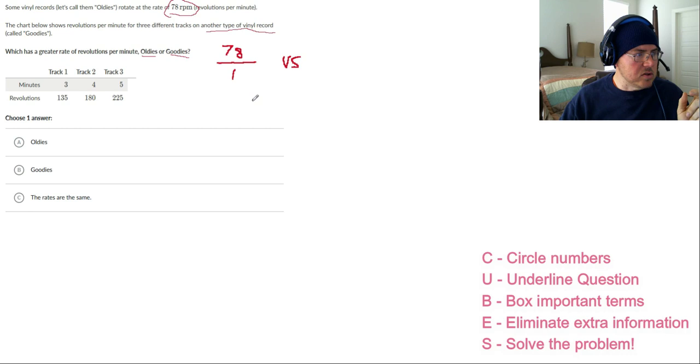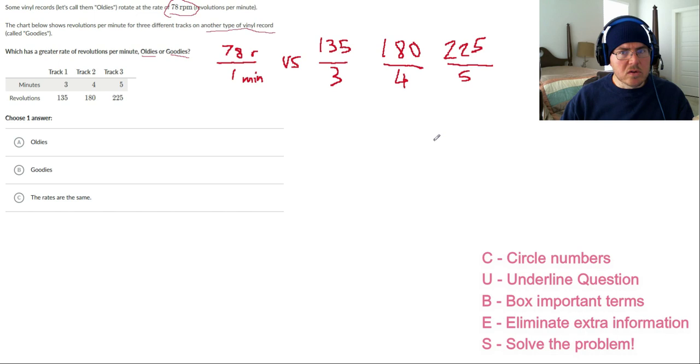Now these, we're going to compare these. So we're going to compare that to 135 for three minutes. I'm always going to put the revolutions on the top and the minutes on the bottom. That'd be 135 for three versus 180 for four minutes. And then 225 for every five minutes. So these are just simply division problems.